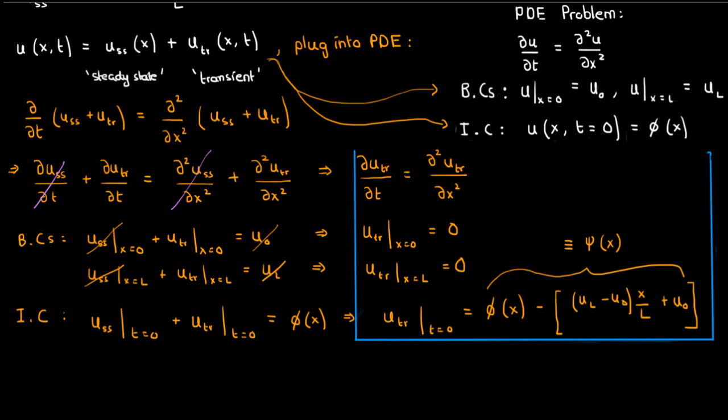So overall, our transient subproblem is given by this PDE, these two boundary conditions, and this initial condition. Notice what's happened here. Our boundary conditions, which were previously non-homogeneous, are now homogeneous. So it's possible to go ahead and use separation of variables on the transient solution.